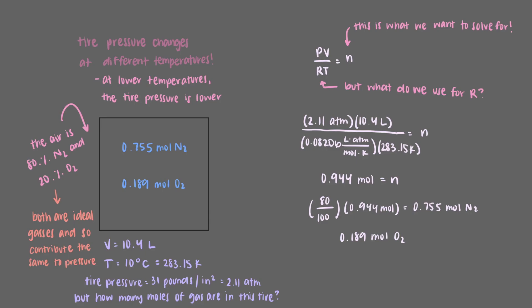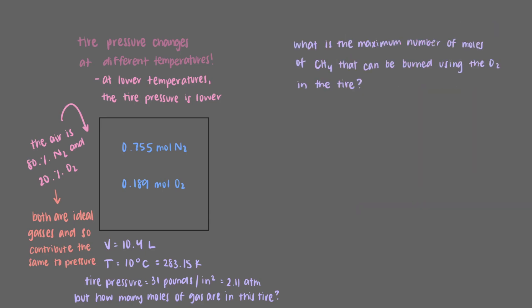This beaker has all of the information that we'd need to solve any number of problems that we could be asked about this tire. For example, what's the maximum number of moles of methane that can be burned using the oxygen in the tire? The reaction is this. As always, the first step is to draw our beaker, which we did. Awesome.